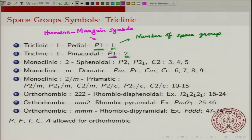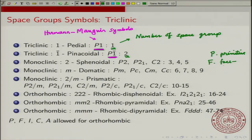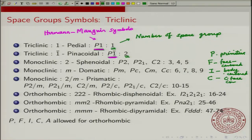For the orthorhombic class with the 222 rhombic disphenoidal class, there are a total of 9 different space groups, numbered 16 to 24. To recap the lattice symbols: P means primitive, F means face-centered, I means body-centered, C is C-face-centered, and A is A-face-centered. In one example, I means the body-centered case, and each of the twofold axes required for orthorhombic symmetry is a 2₁ screw axis.